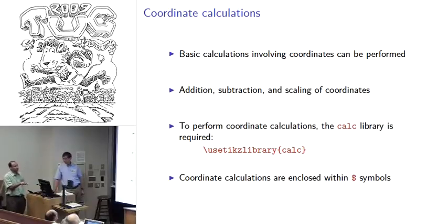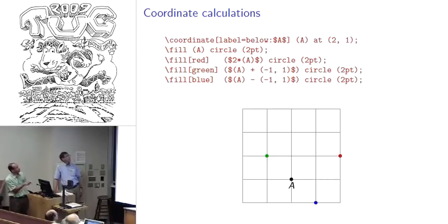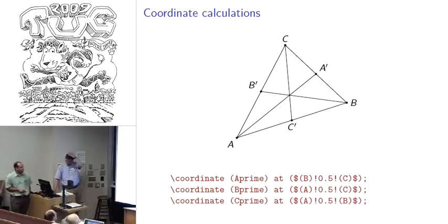Basic calculations involving coordinates can also be performed. However, to do this you need to include the TikZ library called calc. Any time you're doing a coordinate calculation, you enclose them within the dollar sign - kind of like putting it into math mode, but in this case we're talking about doing a computation. You can do addition, subtraction, scaling of coordinates, among other things. Here's a simple example - we're going to create a coordinate here called A at a particular location, put a dot there, fill a little circle. Then we're going to create some other circles. Inside this coordinate, we're putting the dollar signs to indicate we're doing a coordinate calculation. Then we do two times A, so that's going to do a scalar multiplication. You can also add and subtract other coordinates - these could have been named coordinates or, in this case, given explicitly.